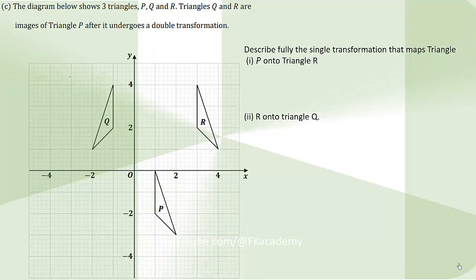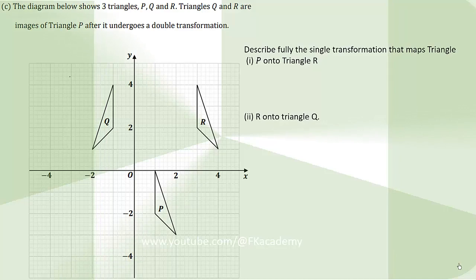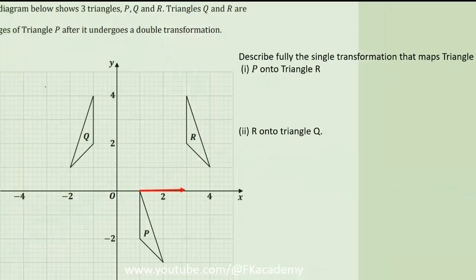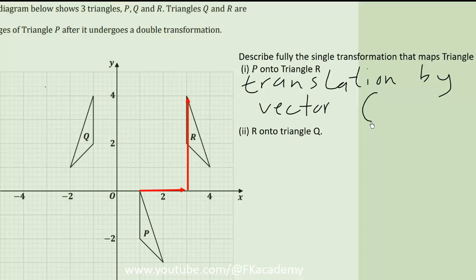Part I asks for the single transformation that maps triangle P onto triangle R. Looking at these parts of the triangle, when you move it two units to the right and four units up, it will fall on triangle R. This tells us the single transformation that maps P onto triangle R is a translation by vector (2, 4).